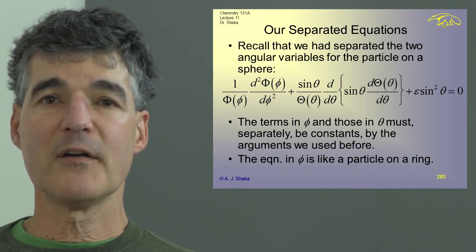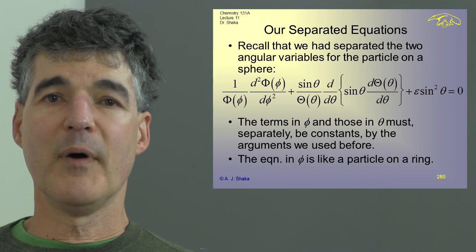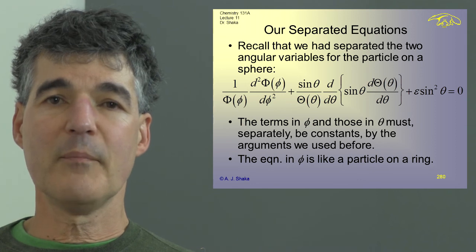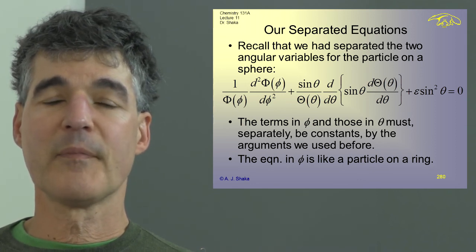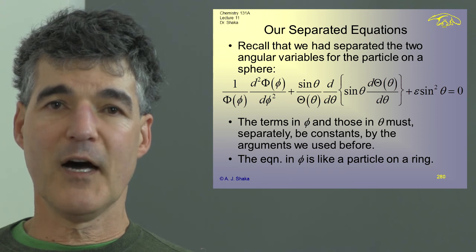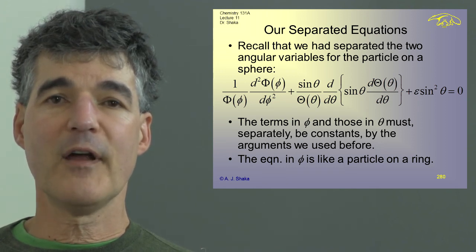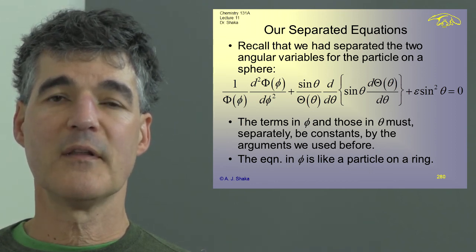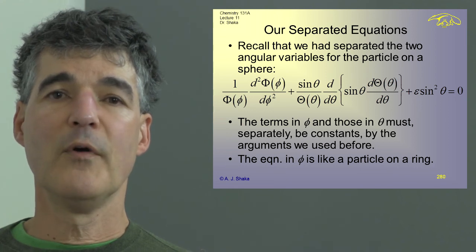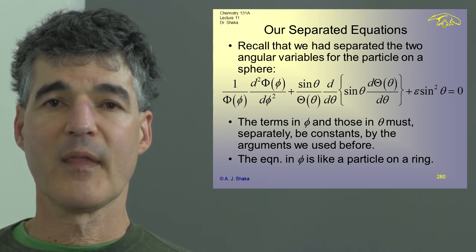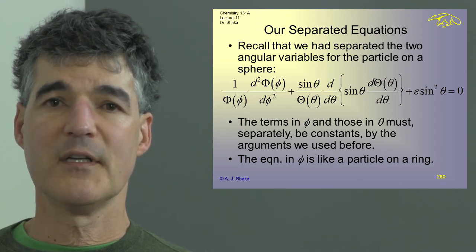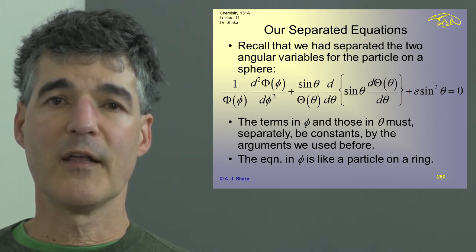Remember that we had our separated equations. By dividing by the product of theta of theta and phi of phi, we ended up with a sum of several terms. One of the terms only has phi and the function of phi, and the other has only theta. By the same arguments we used in the two-dimensional particle in a box, we can separate the solutions and deal with them separately. That's a very important simplification because it lets us deal with just a function of one variable and regular derivatives.